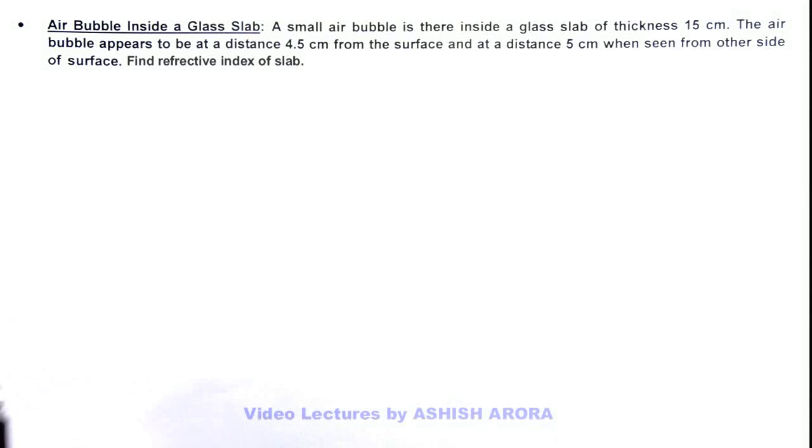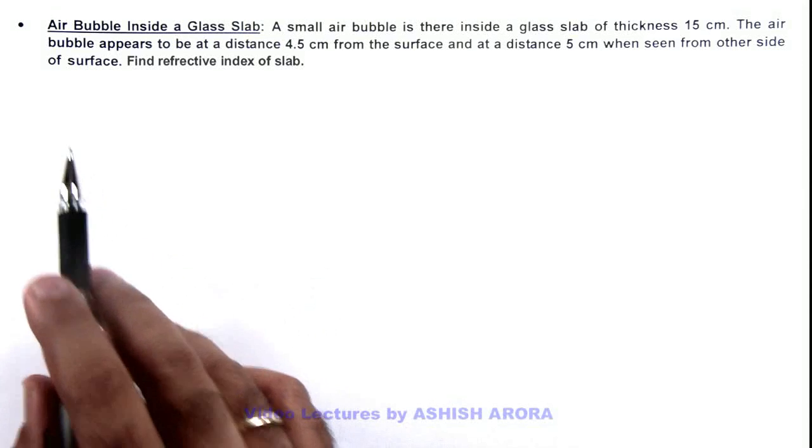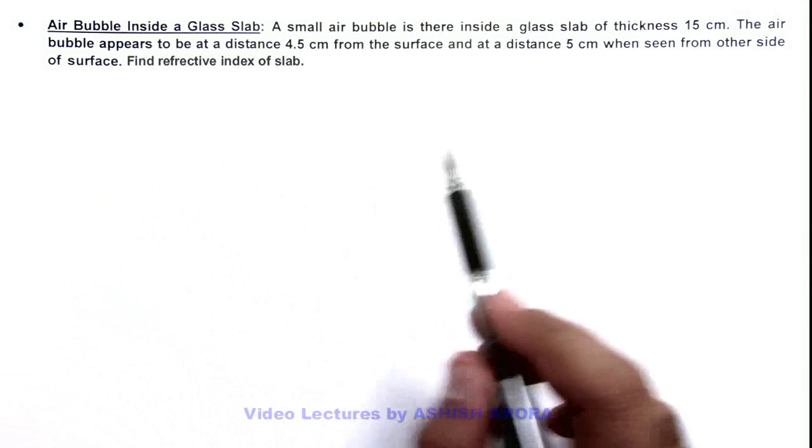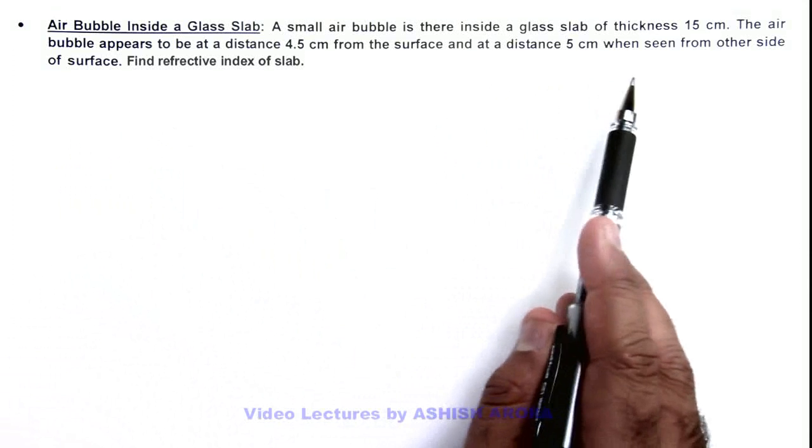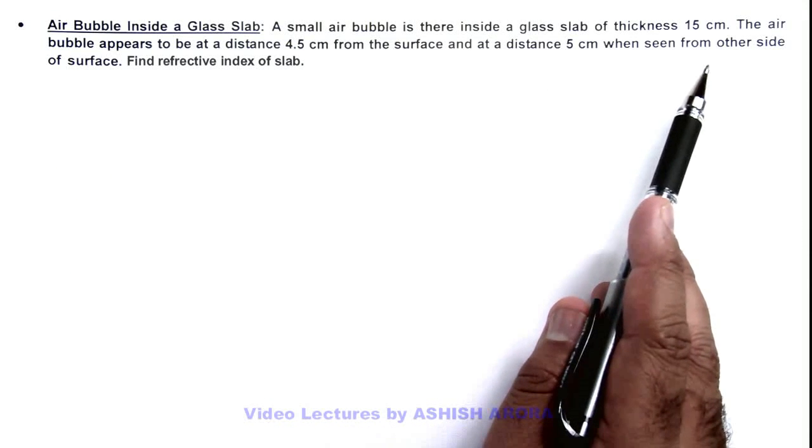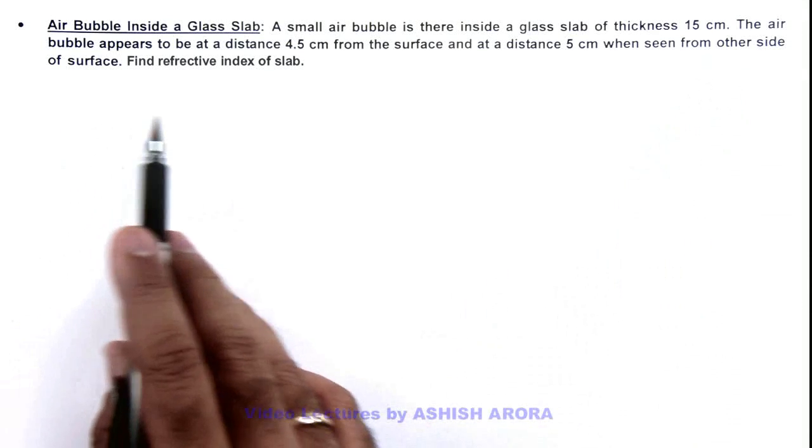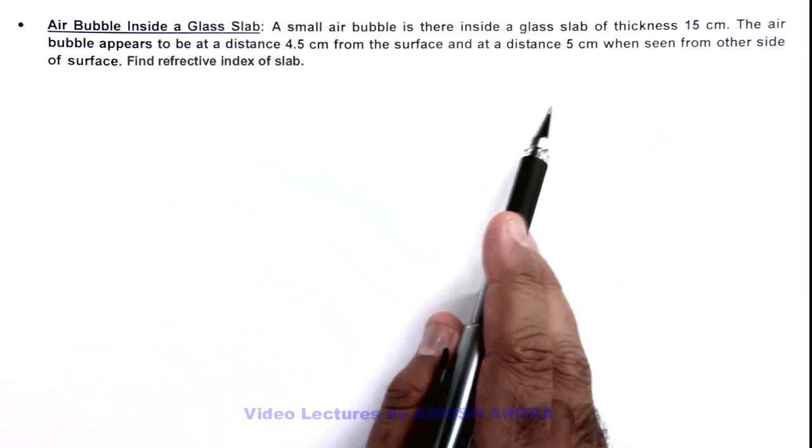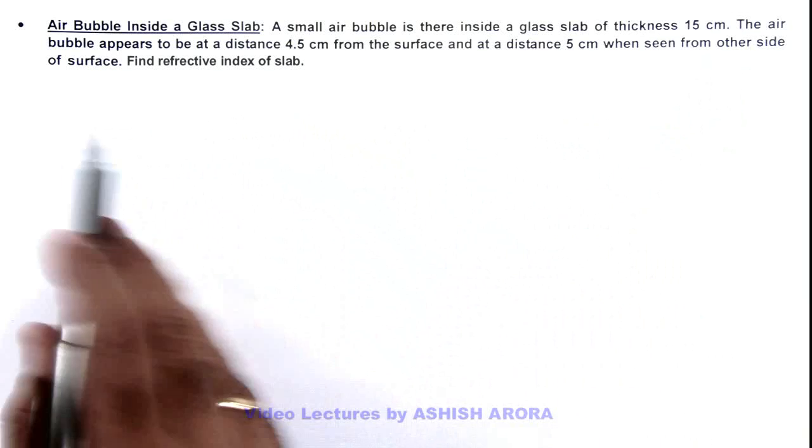In this illustration, we are going to study an air bubble inside a glass slab. We are given that a small air bubble is there inside a slab of thickness 15 centimeter. The bubble appears to be at a distance 4.5 centimeter from the surface and at a distance 5 centimeter when seen from other side of the surface.